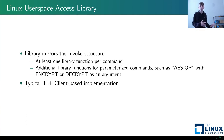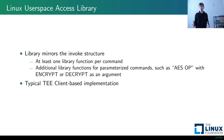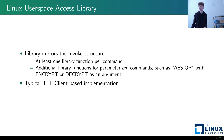Having finished the trusted application, we move to the Linux user-space application. The user-space library is very simple — it mirrors the invoke structure of TA_InvokeCommandEntryPoint. Each function call sets up the correct command number and calls the TEE client to invoke that function within our TA. Parameter validation is optional in the user-space library, but under all circumstances you must validate parameters within the trusted application. If you can only do it in one place, be sure to get the trusted application.